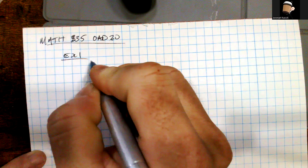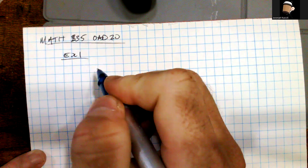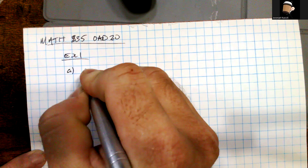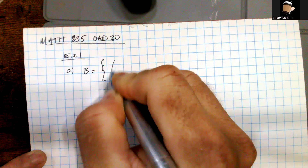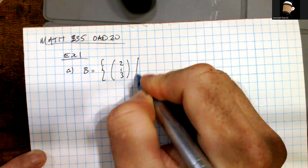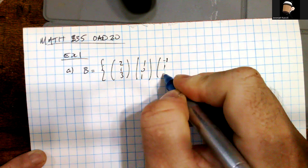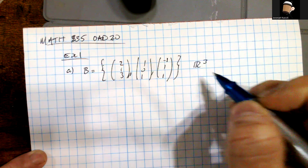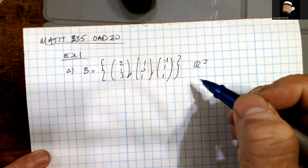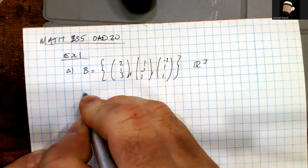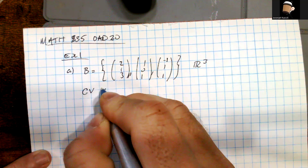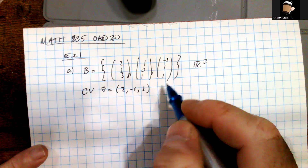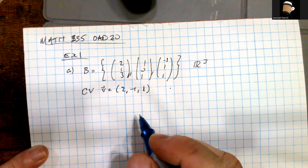Welcome back to Day 20 for Math 335, with example one — actually the only example for this day. For part A, we are given a basis set: {(2,1,3), (1,0,1), (-1,1,1)}, which is a basis for R³, meaning these vectors are linearly independent and span R³. We want to compute the coordinate vector of V = (2, -1, 1). We are going to do it two ways: using reduced row echelon form, and then using the change of basis theorem.